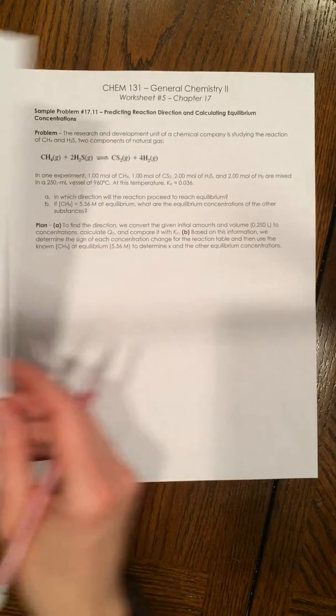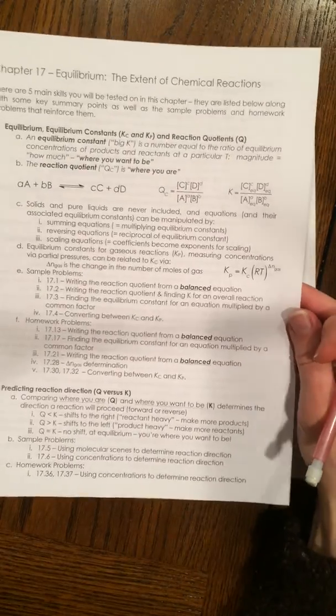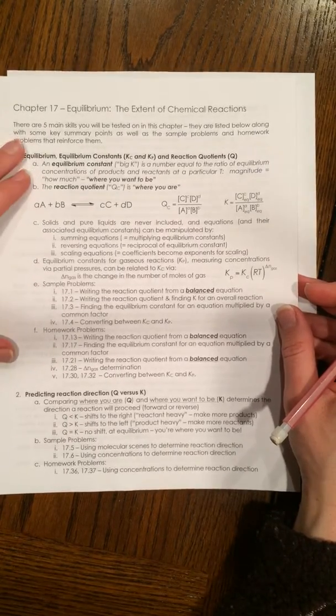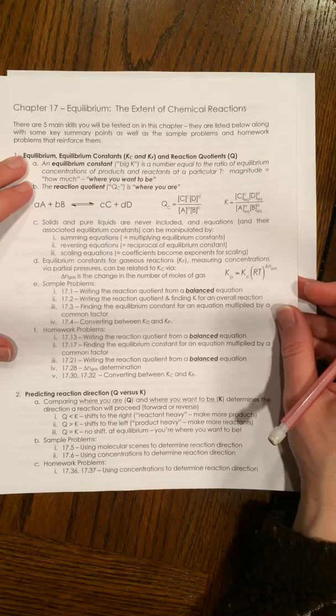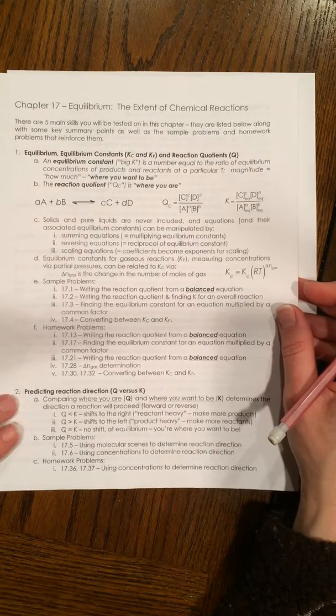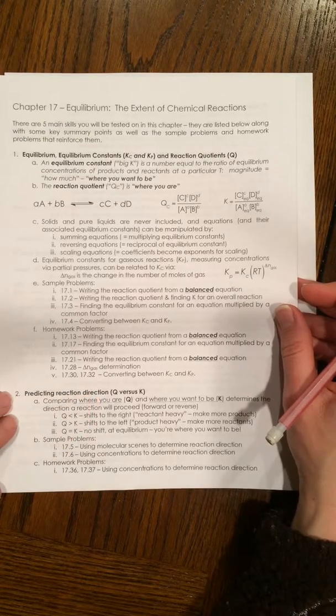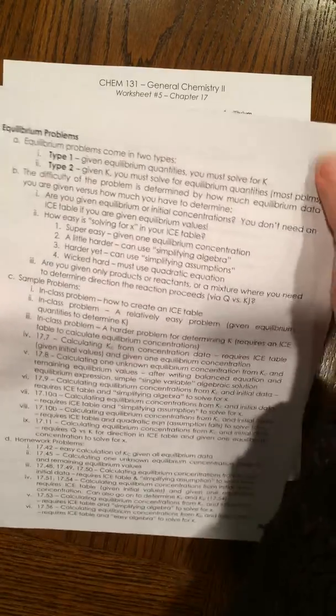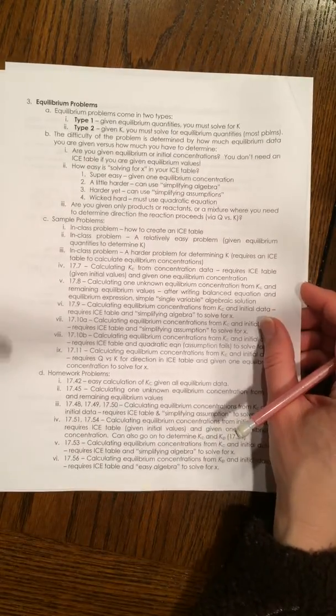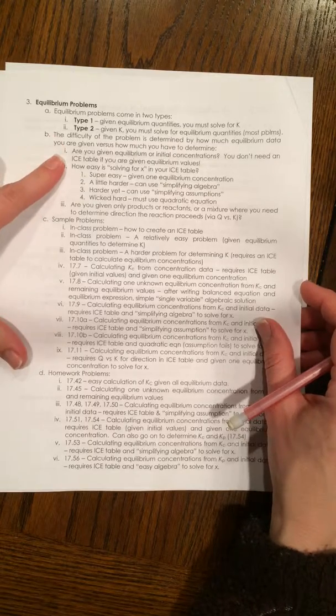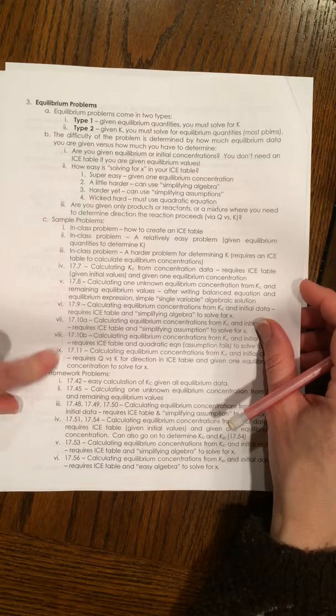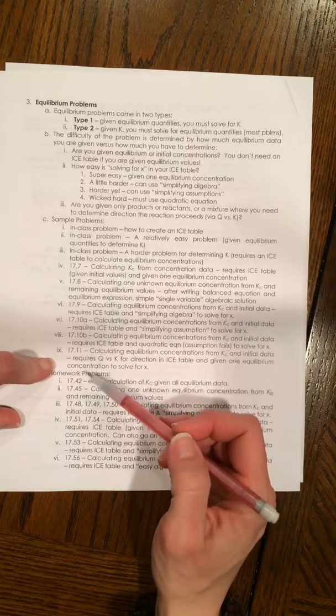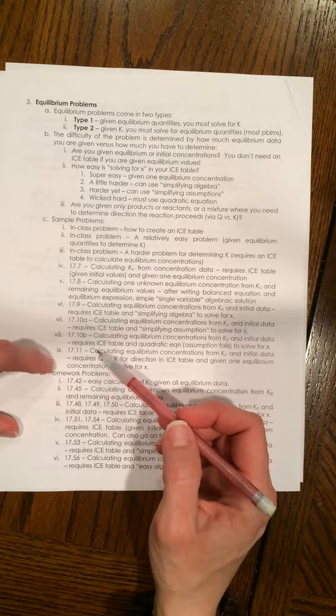So chapter 17 on equilibrium, and as we highlight here in our review sheet with the five skills that are important, we first studied equilibrium and equilibrium constants, then thinking about reaction quotients. Then we used a Q versus K comparison to predict which direction a reaction would proceed. And then we've been working our way through equilibrium problems, learning how to create an ice table. And then a number of sample problems that basically vary in difficulty based on how easy it is to obtain those equilibrium quantities.